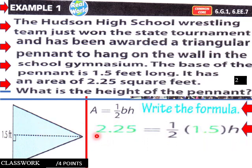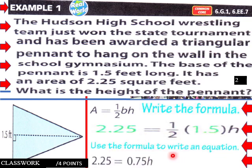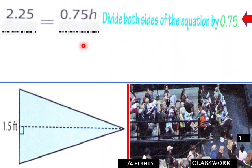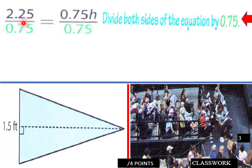This triangle has an area of 2.25 and a base of 1.5 feet, but we need to find H. Use the formula to write an equation: 2.25 equals one-half times 1.5 times H, which gives us 2.25 equals 0.75H. To solve this equation we need to divide both sides by 0.75 — the division property of equality.